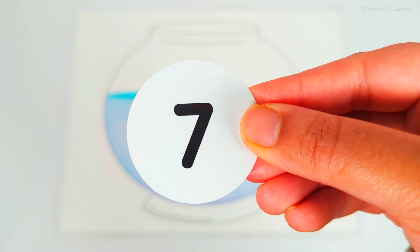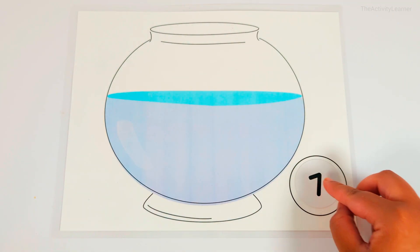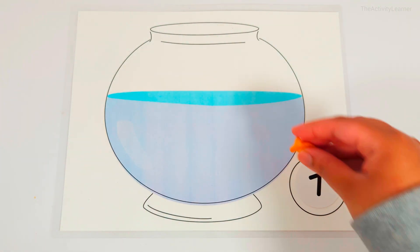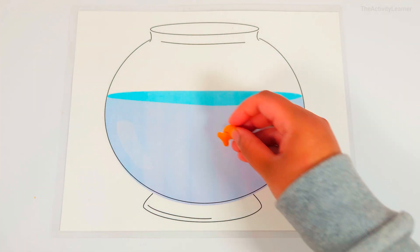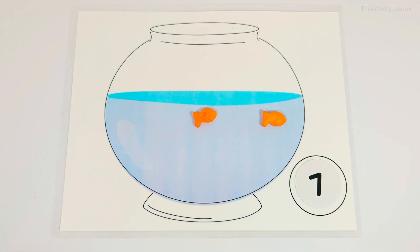Number seven. One, two, three, four, five, six, seven. Seven goldfish.